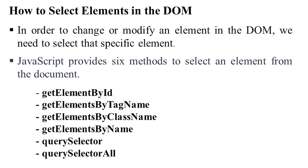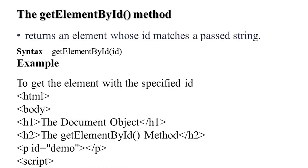We can select elements from the HTML document using: getElementById, getElementsByTagName, getElementsByClassName, getElementsByName, querySelector, and querySelectorAll. querySelector and querySelectorAll were covered in the first session. I will be covering the first four. The first one is getElementById — it returns only the element whose ID matches the passed string. The syntax is getElementById, and we pass the ID.